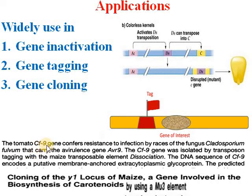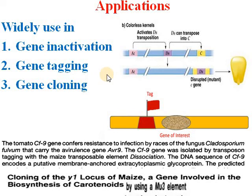Here is an example: the CF9 gene, which produces a substance that gives resistance to infection by fungus, was for the first time isolated with the help of the DS element in maize. It has since been inserted in many other plants, because DS and AC elements are not restricted to the maize plant. We can also create functional proteins in other organisms such as barley, rice, and wheat using DS elements. Additionally, the Y1 locus of the maize plant has been isolated with the help of the Mu3 element.